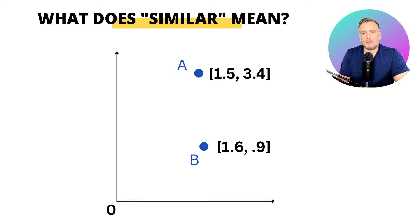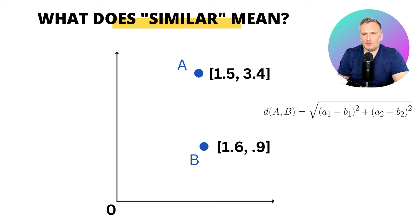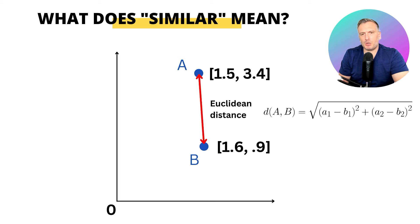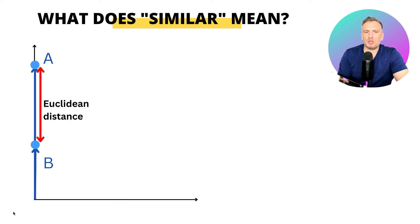What does similar mean for two vectors? Let's say you have two vectors A and B. They have two dimensions and can be represented in a two-dimensional plane. For example, we could use the Euclidean distance to measure how far apart they are in the space. We need to be aware of the limitations of metrics when computing similarity metrics.